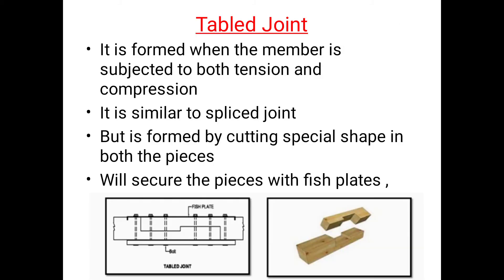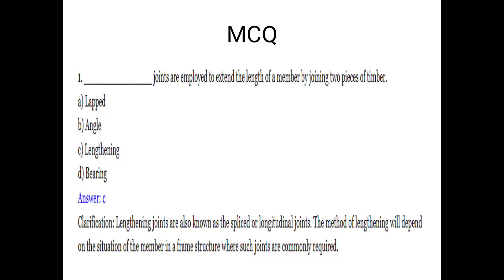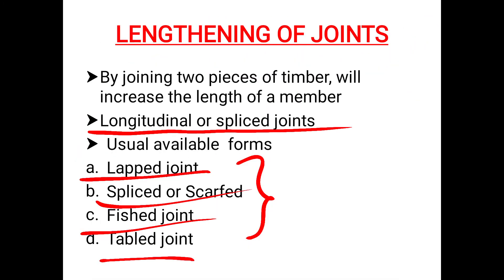The tabled joint is formed when the member is subjected to both tension and compression. It is similar to a splice joint. The splice joint is formed by cutting a special shape in both pieces and securing them with fish plates. The lengthening joints are available in four forms.